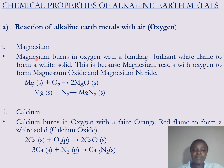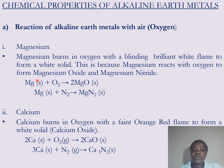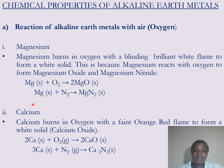We look at magnesium first. When magnesium reacts with oxygen, magnesium burns in oxygen with a blinding brilliant white flame to form a white solid. This white solid is due to the formation of two products: magnesium oxide and magnesium nitride. Magnesium is very reactive and when burnt in air it reacts with both oxygen and nitrogen, giving two products. The chemical equations are: magnesium plus oxygen to give magnesium oxide, and magnesium plus nitrogen to give magnesium nitride.